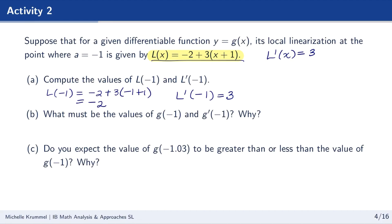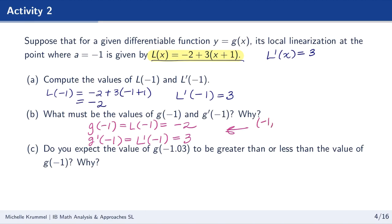The next question asks what must be the values of g of negative 1 and g prime of negative 1. At the point of tangency, the function and the tangent line have the same value and the same slope. So even without the original equation for g of x, we can say g of negative 1 equals l of negative 1, which is negative 2, and g prime of negative 1 equals l prime of negative 1, which is 3.